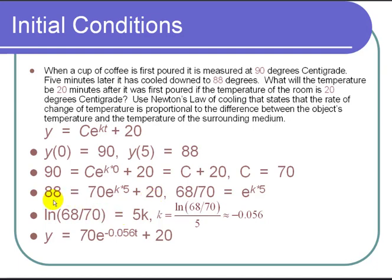So subtract 20 from both sides. 88 minus 20 is 68. And divide by 70. And we get 68 over 70 equals e to the 5k. Take a natural log of both sides. And we get the natural log of 68 divided by 70 equals 5 times k. And then finally divide by 5. That gives us our k.